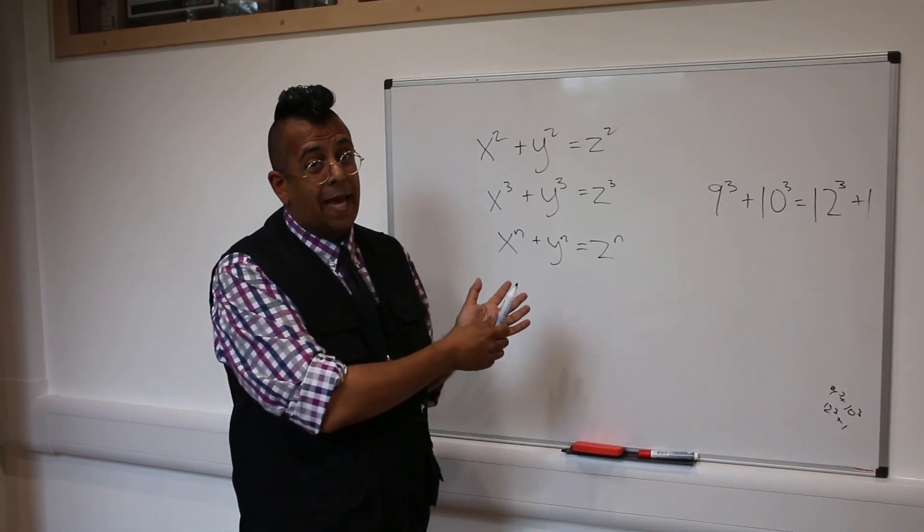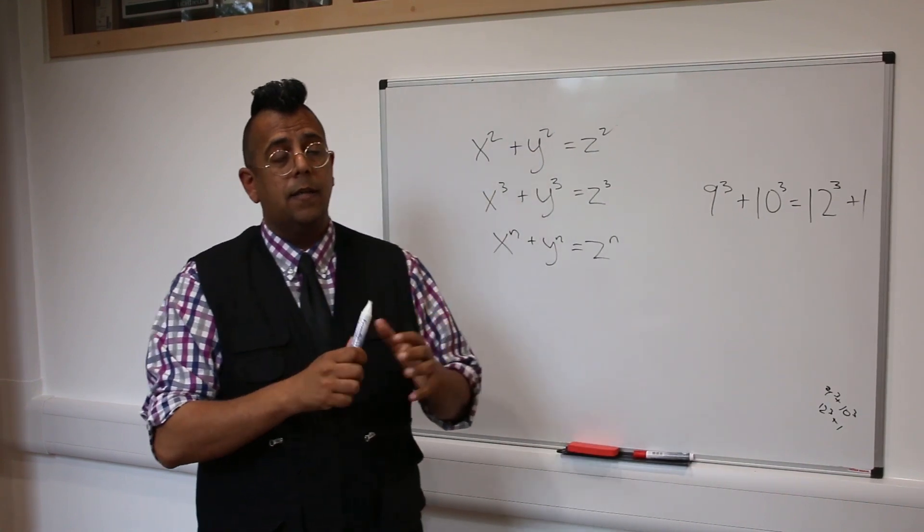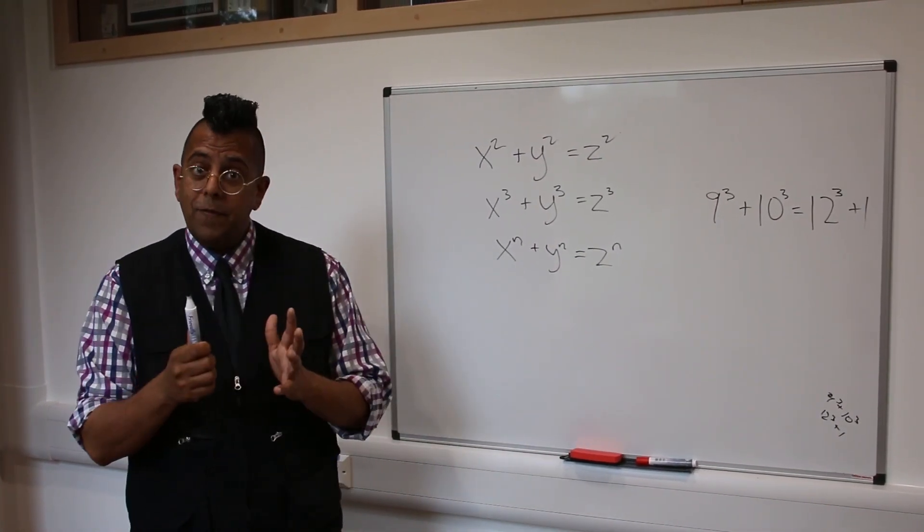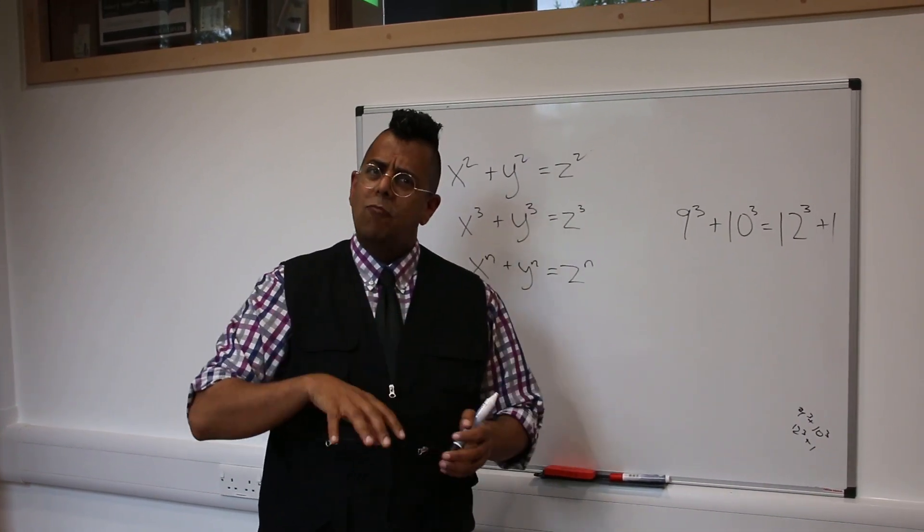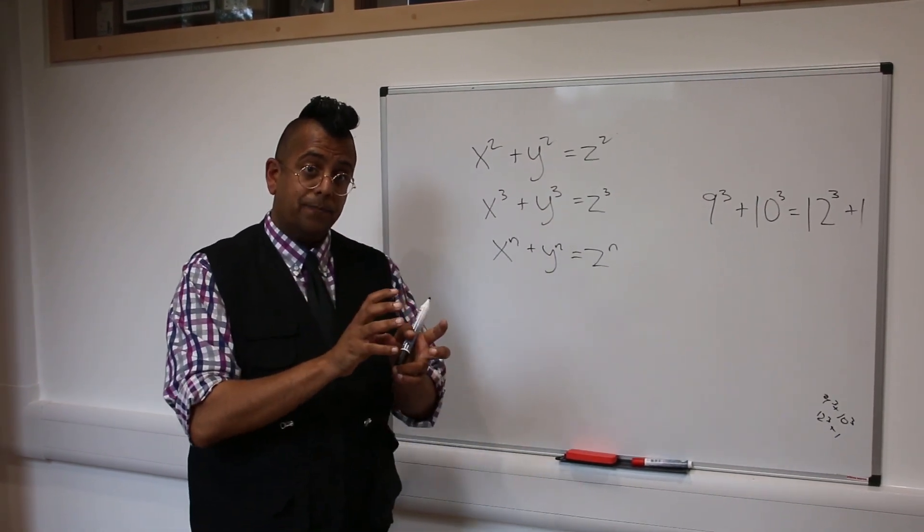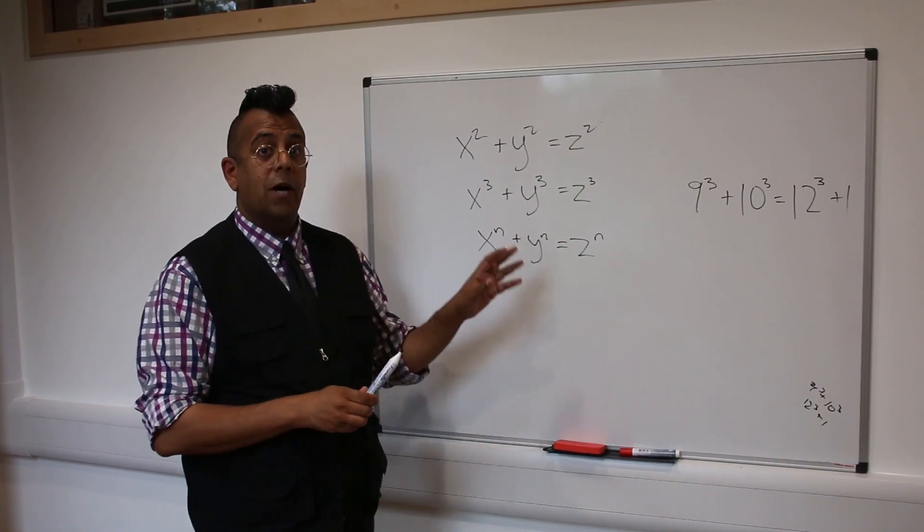So, maybe Fermat made a mistake. I think that's probably the most likely answer. Fermat thought he had a proof, but he didn't. Or maybe he really did. Maybe Pierre de Fermat came up with a proof that uses 17th century techniques, relatively simple techniques, but put together in an incredibly clever way. So clever that nobody's ever found Fermat's original proof.